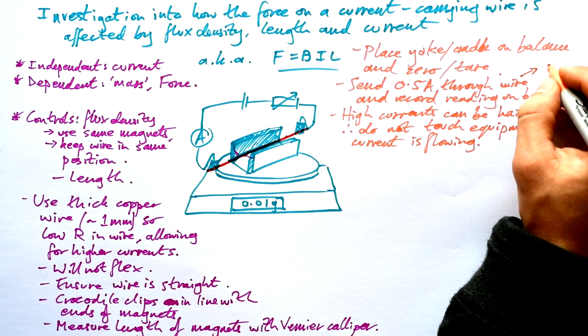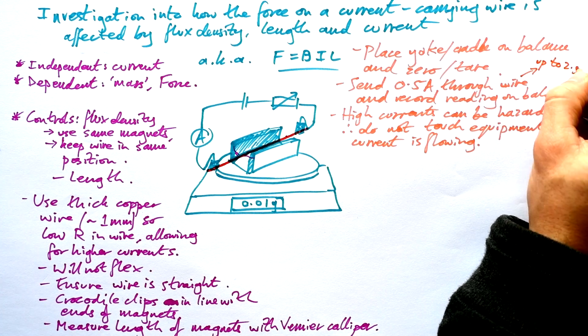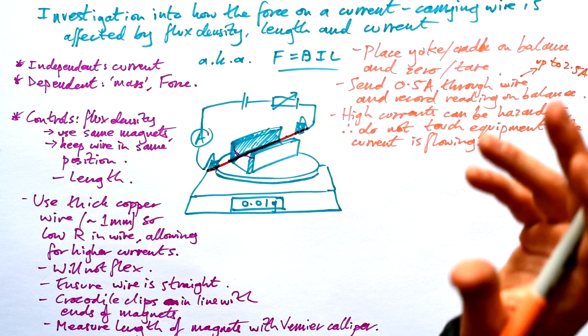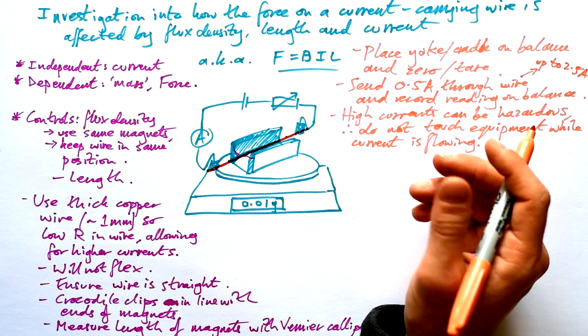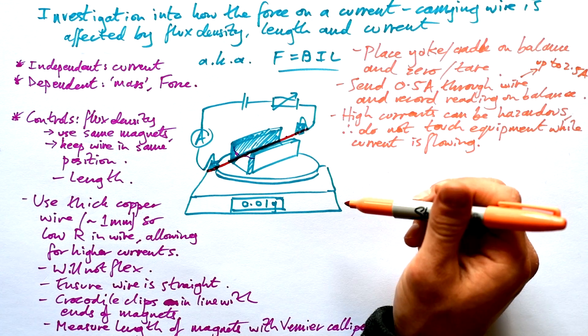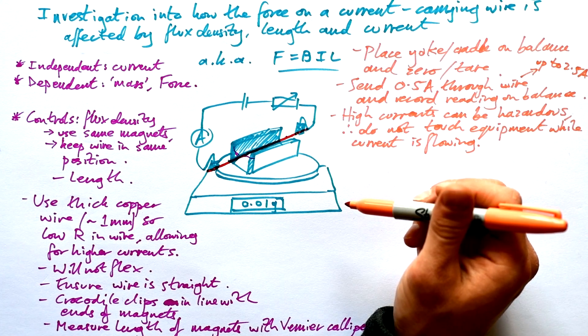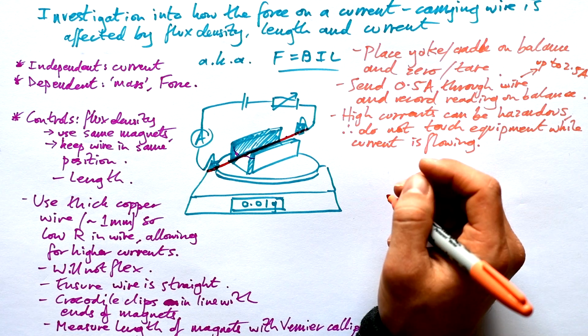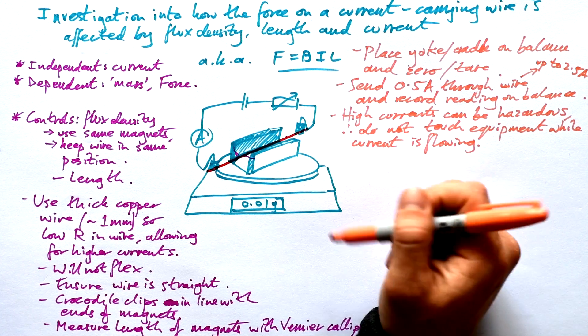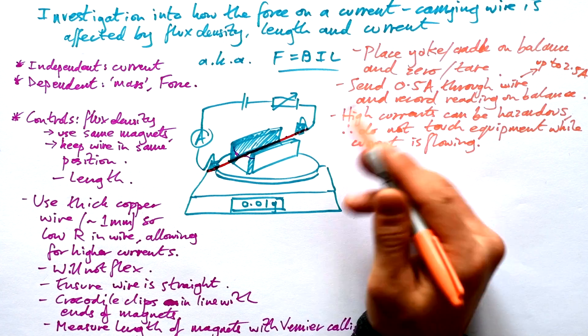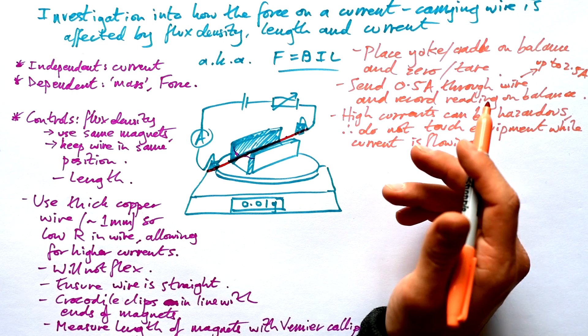We're going to do say five different currents, let's say up to 2.5 amps or something like that but you could do 0.2 up to one, it's up to you. Now you could do repeats, you could do it three times however nothing is going to be changing in between. Repeat reading should be done if there is a random error but with this setup there should be no random error because it's just the equipment.